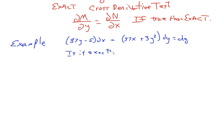Well, we can simply apply the test. M is going to be 37y minus 5, and N is going to be 37x plus 3y squared.